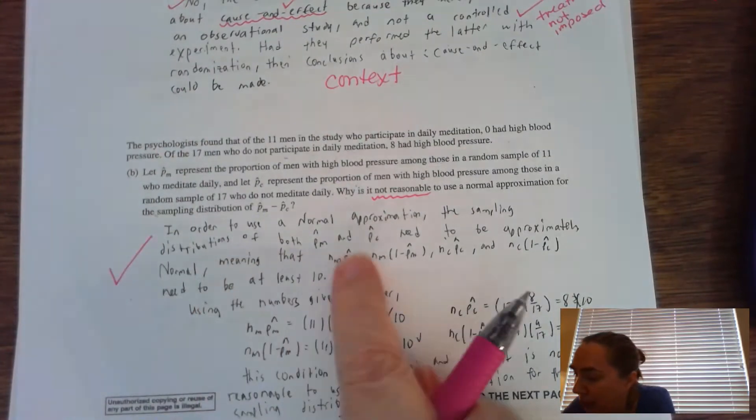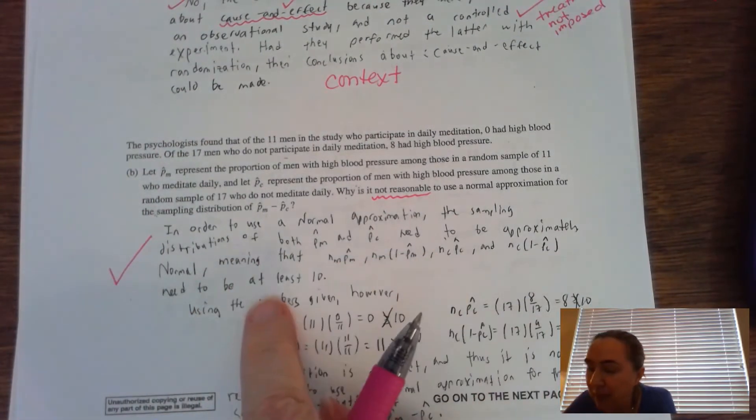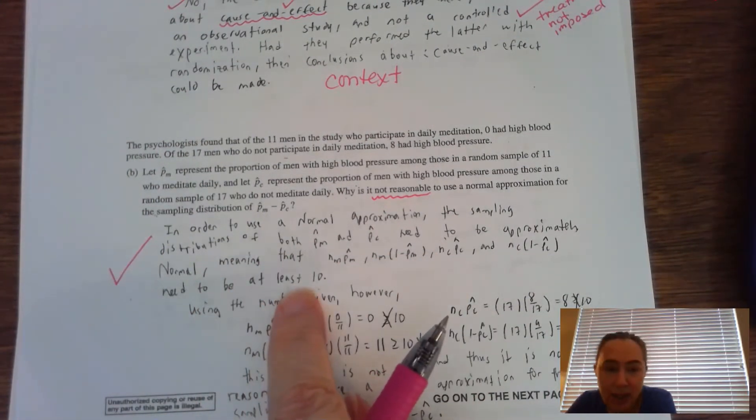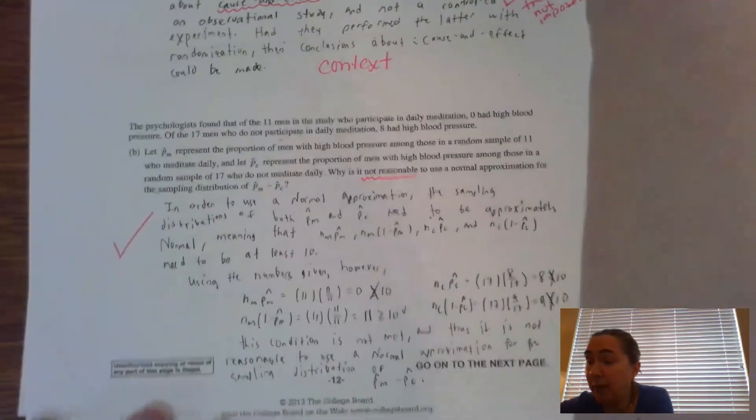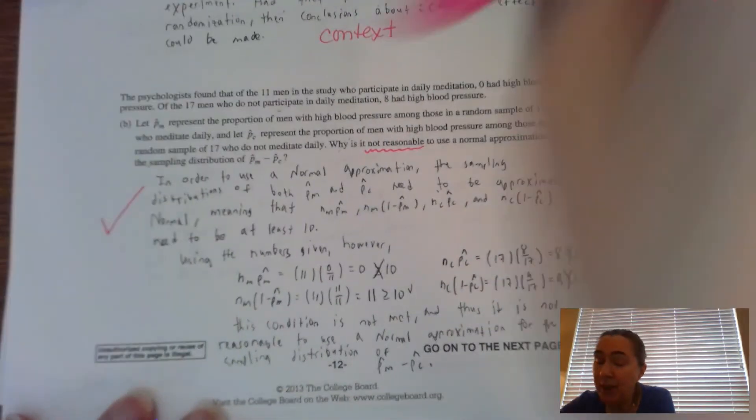It has to be at least 10 and there has to be a verbal component to that particular answer. And they actually talk about that, that it is not met because it needs to be at least 10 and it wasn't, there has to be some kind of verbal conclusion. Now there was a lot of things that the AP was looking for to give full credit because this was barely, that answer is barely worth anything.